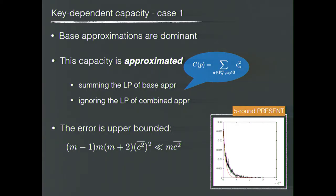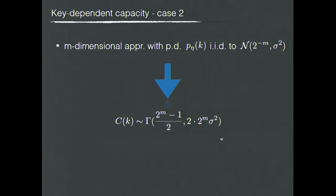We performed experiments on reduced-round PRESENT, and as you can see, the experimental results follow the theoretical results quite closely. In the second case, we assume that the probability distribution of the m-dimensional approximation is identically and independently distributed according to a normal distribution, and in this case the capacity follows a corresponding gamma distribution.